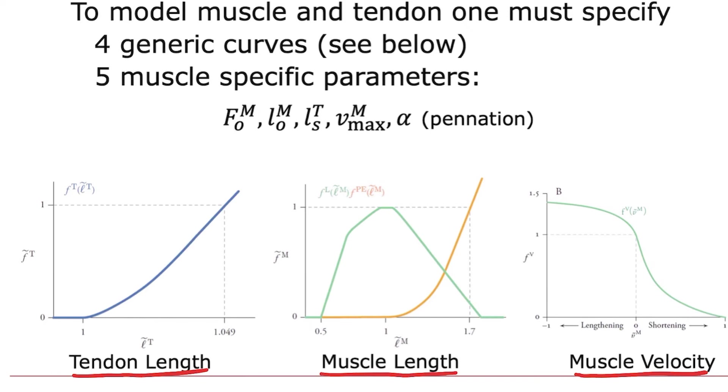The peak isometric force—that is, how much force you get when the muscle is at its optimal length and maximally excited. The optimal fiber length—that's the length at which it occurs. So those are the two parameters that scale the force-length curve. The tendon slack length—that's the length at which tendon starts to develop force.